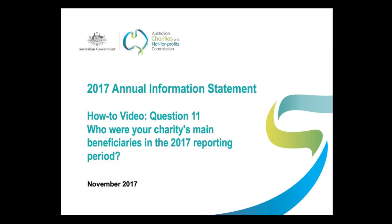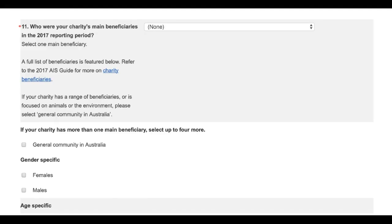Hi and welcome. This video aims to help you answer question 11 in the 2017 Annual Information Statement. Question 11 asks: who were your charity's main beneficiaries in the 2017 reporting period? This question is on page 2 of the 2017 Annual Information Statement, as you can see on your screen.